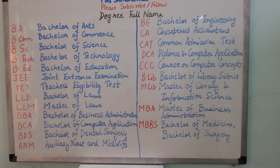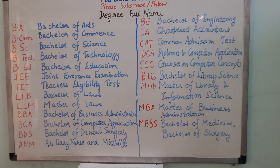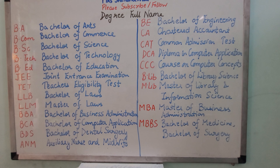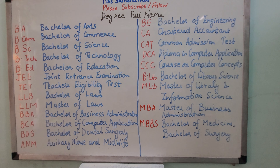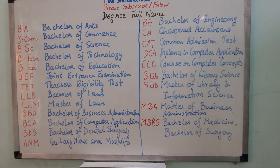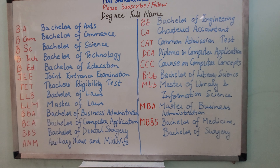CCC is Course on Computer Concepts, B.Lib is Bachelor of Library Science, M.Lib is Master of Library and Information Science.